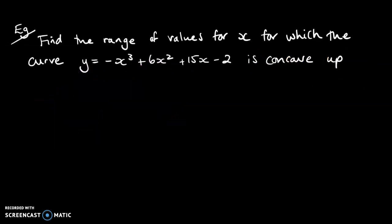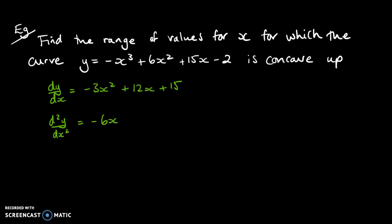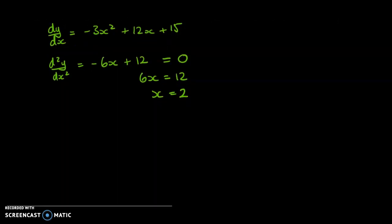In this example, we want to find the range of values of x for which the given curve is concave up. First, find the points of inflection to identify the cutoff point. For points of inflection, we need the second derivative. Differentiating once gives the first derivative, and differentiating again gives the second derivative as −6x + 12. Setting that equal to zero: 6x = 12, so x = 2. We have a point of inflection at x = 2.